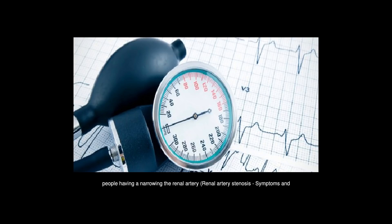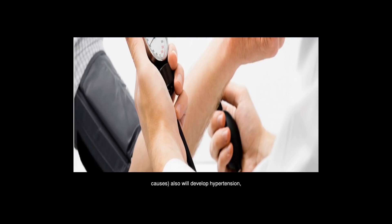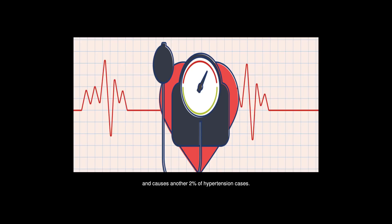People having a narrowing of the renal artery (renal artery stenosis) also will develop hypertension because the kidney gets less blood. Thus it ramps up a mechanism to try to up blood pressure in general, and causes another 2% of hypertension cases.